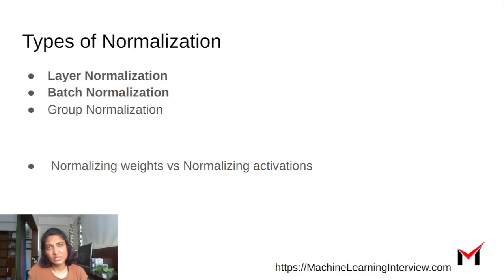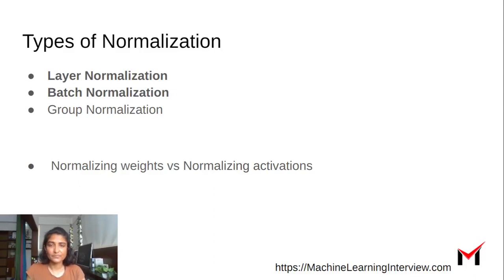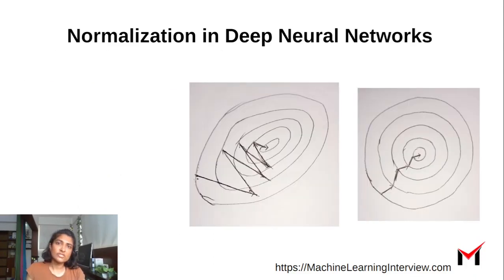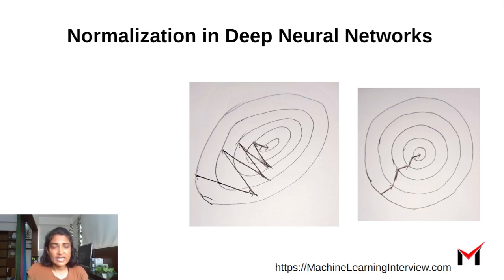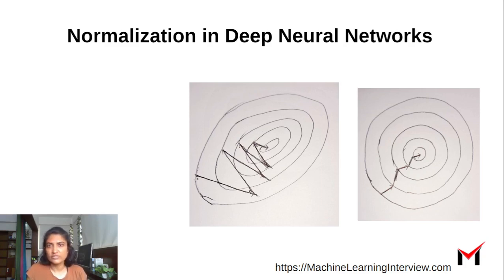I'm planning to record a few more videos to talk about each of these in more detail. To summarize, today we looked at what normalization is and why we need normalization in deep neural networks, and the different types of normalization — batch normalization, layer normalization, group normalization, and so on. Thank you.